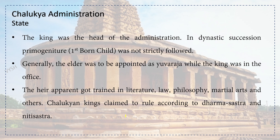We shall see about Chalukyan administration. The king was the head of the administration. In dynastic succession, primogeniture — that is, the firstborn child inheriting — was not strictly followed. Generally, the elder was to be appointed as Yuvaraja, the prince, while the king was in office.